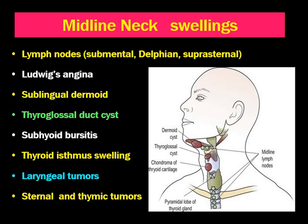Next is Ludwig's Angina. Ludwig's Angina starts with one side, either right or left, but as the disease progresses, it comes to the midline and crosses the midline also. On examination, there will be diffuse swelling in the submental and submandibular regions. There may be history of dental caries or dental trauma.